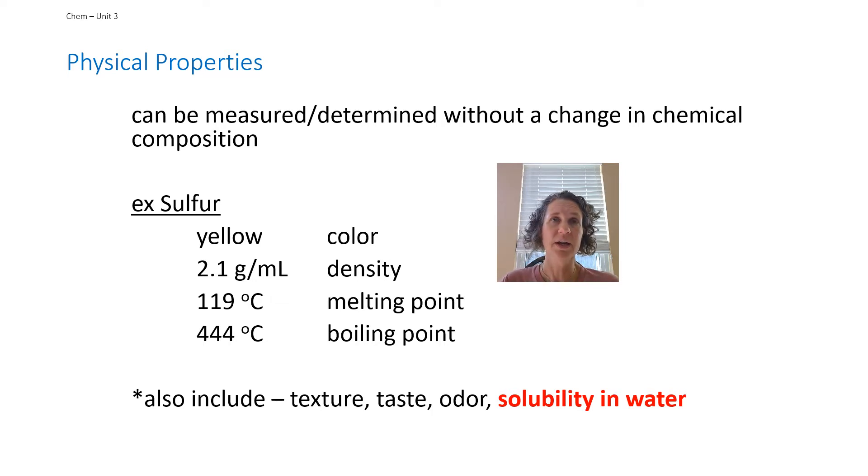If you attempted to melt it and it was in a solid form, it would melt at around 119 degrees Celsius. If you boiled it, it would be 444 degrees Celsius. All of these don't change the sulfur atoms themselves. If you let it cool back down from boiling and let it solidify, it's just sulfur again. It could also include odor and we could talk about taste, although you wouldn't taste sulfur. The texture, all those kinds of things. One big one that I want to highlight for physical properties is solubility in water.